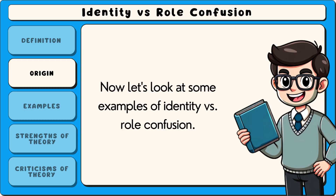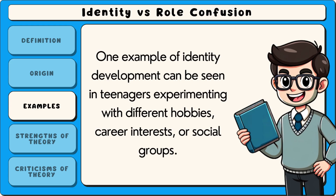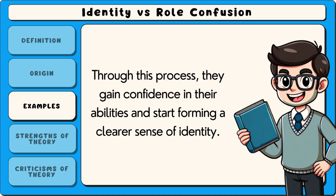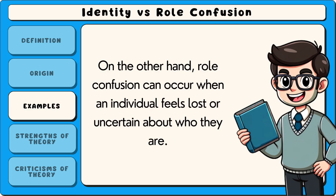One example of identity development can be seen in teenagers experimenting with different hobbies, career interests, or social groups. A student might explore different extracurricular activities, such as joining a sports team or a debate club, to discover what aligns with their interests and values. Through this process, they gain confidence in their abilities and start forming a clearer sense of identity.